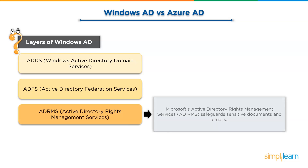Third is ADRMS, Active Directory Rights Management Services. Microsoft Active Directory Rights Management Services safeguards sensitive documents and emails unlike traditional security methods like firewalls and ACLs. ADRMS encryption and protection remain constant regardless of where a file goes or how it is transferred.